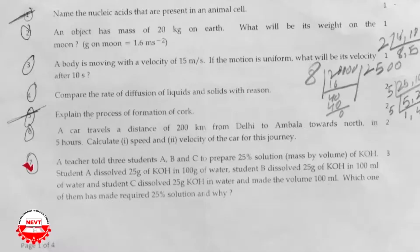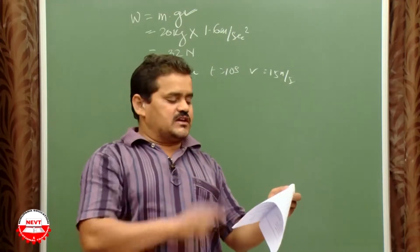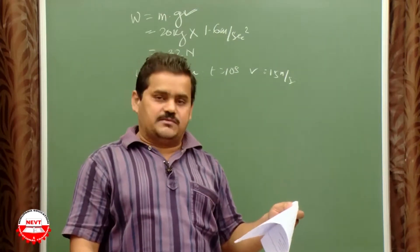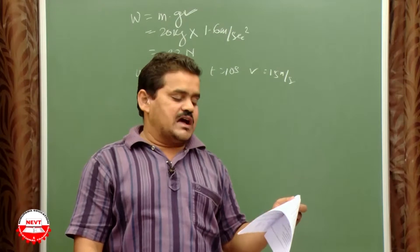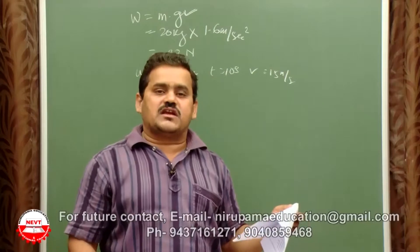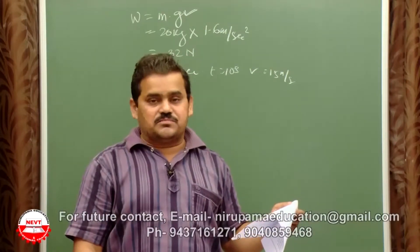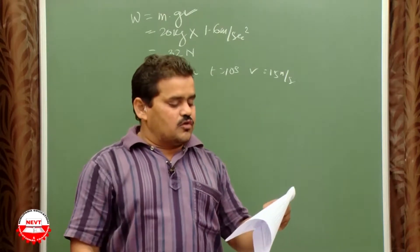Question number six: A car travels 200 km from Delhi to Ambala towards north in 5 hours. Calculate the speed and velocity. Distance = 200 km, time = 5 hours. Speed = distance/time = 200/5 = 40 km/h. Since it travels in a straight line, speed and velocity are both equal to 40 km/h.